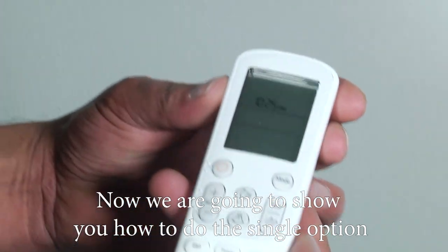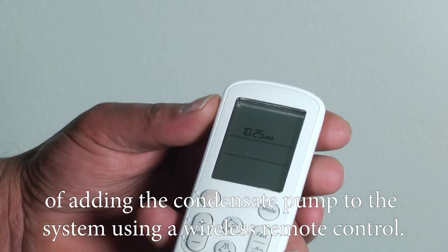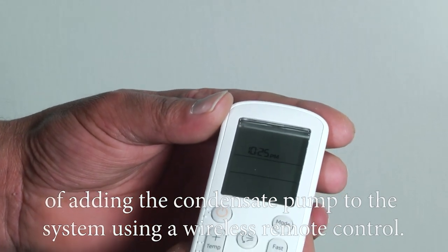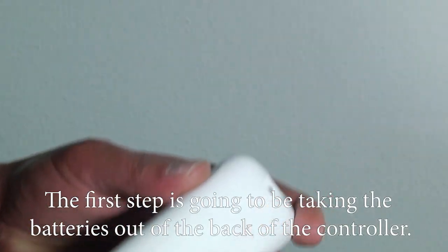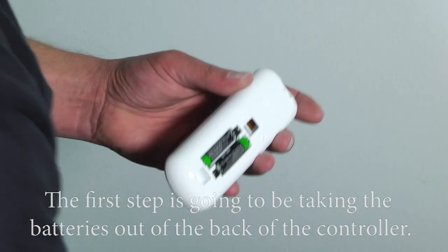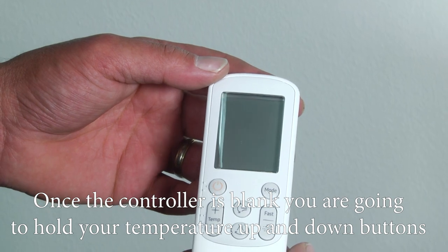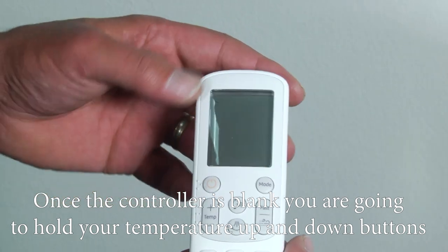Now we're going to show you how to do the single option of adding the condensate pump to the system using a wireless remote control. The first step is going to be taking the batteries out of the back of the controller. Once the controller is blank,